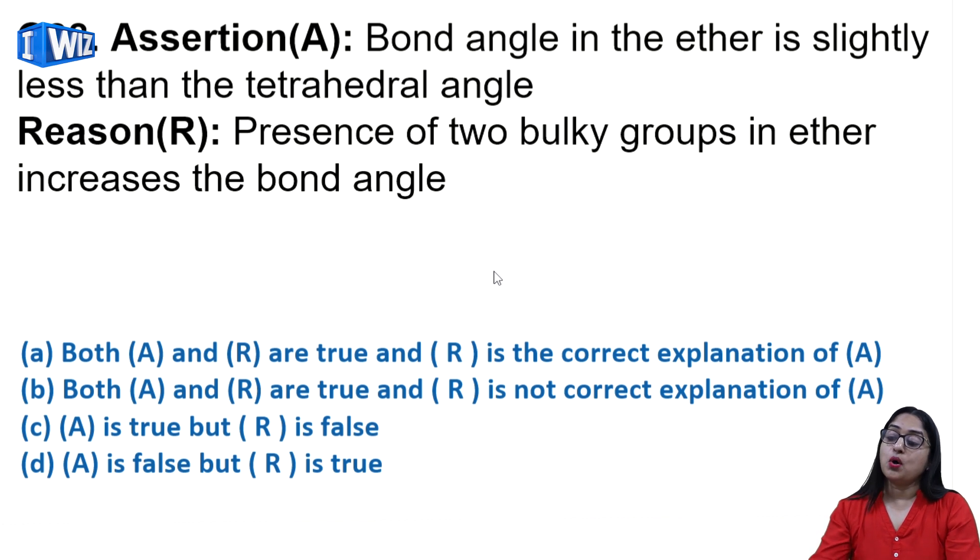Next: bond angle in ether is slightly less than tetrahedral angle - no, it is around 111 degrees which is slightly greater than tetrahedral angle. It says presence of two bulky groups in ether increases the bond angle - this is true. So assertion is false but reason is true, D is the correct answer.